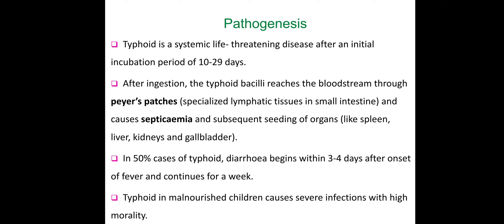If you look at the mechanism, there is a specialized tissue in the intestine. As described in the Robbins and Cotran pathology book, you will see Peyer's patches. The bacteria invades through Peyer's patches and causes septicemia. There is subsequent seeding of organs such as the spleen, liver, kidneys, and gallbladder. In 50% of cases, you will see diarrhea over 3 to 4 weeks.